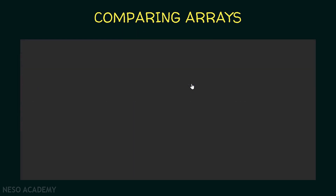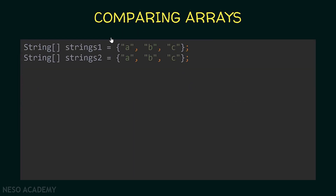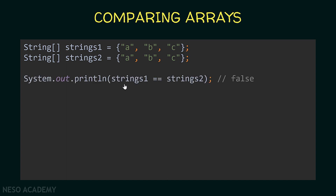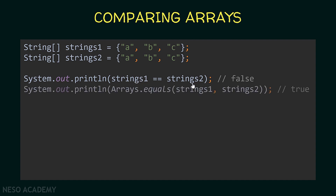Now let's see how we can compare arrays of objects. I have two arrays of strings: the first array contains three strings A, B, and C, and the second one also. These two arrays are equal because they have equal elements. Similarly, if we print strings one == strings two, we will see false because we are comparing the addresses. So I'm going to use the equals method and compare strings one with strings two — in this case we will see true printed.